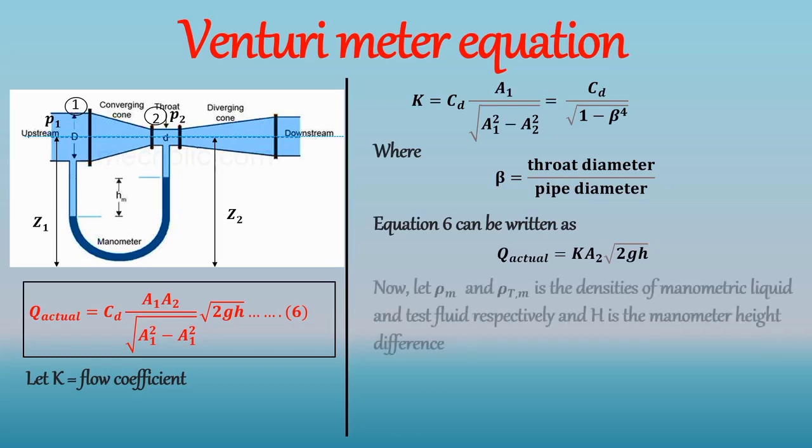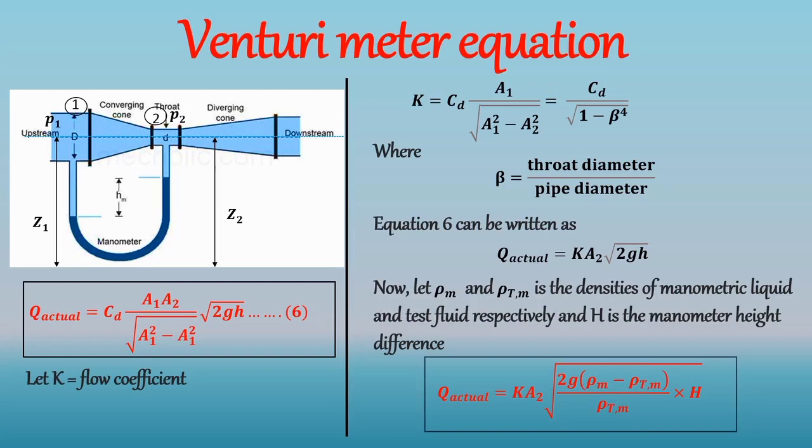Now let rho M be the density of manometric liquid, and rho TM be the density of test liquid. And H be the manometer height difference. Hence the final equation of discharge from Venturi meter is. That's all about Venturi meter.